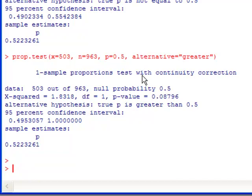But when we come down here and look at the next one, where we specifically said greater than, and notice it says true p is greater than 0.5, we get a p value that is 0.087. So this gives us the ability to do a two-sided test, a greater than test, or a less than test. And notice it gives you a sample estimate on your sample proportion as well.